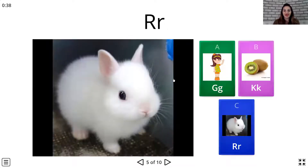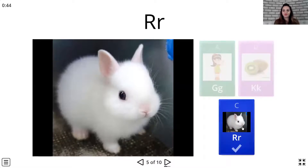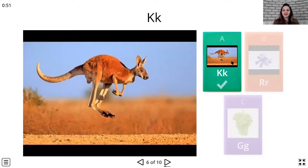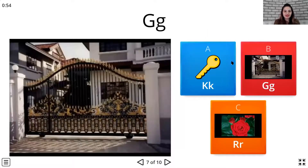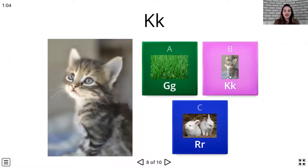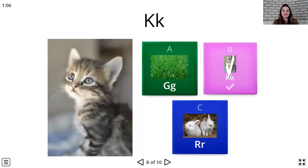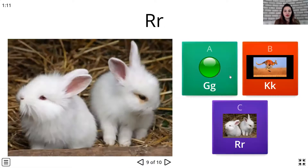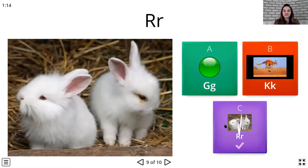Okay. Rabbit. Go. K, kangaroo. Let's see which picture comes next. G, gate. Great. Now the next one. Kitten. And now rabbits again.